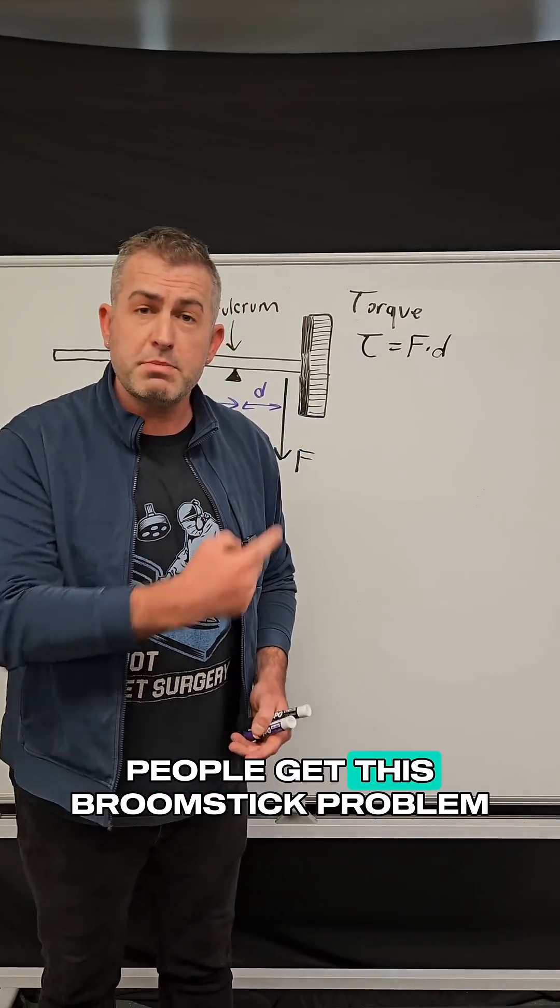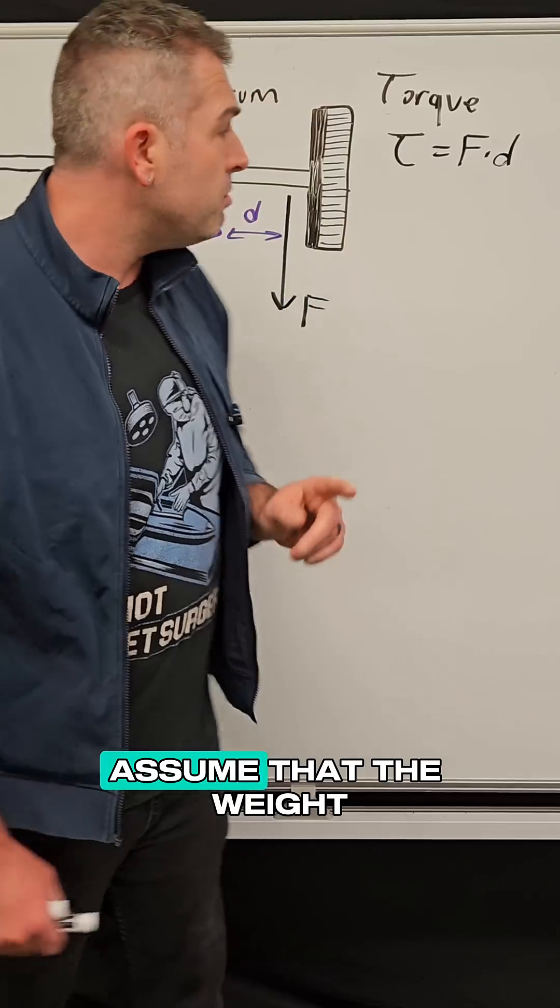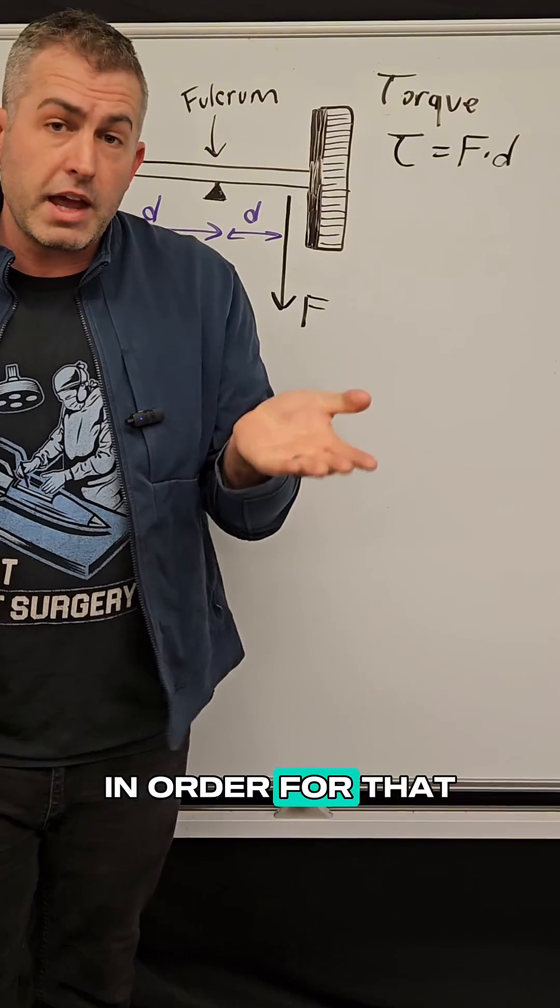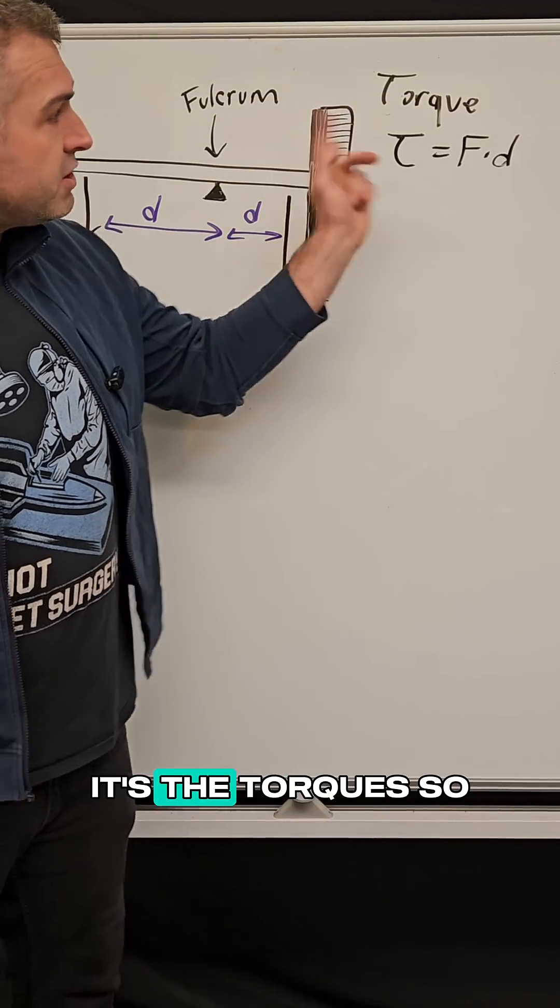So why do so many people get this broomstick problem incorrect? It's because they incorrectly assume that the weight on each side of my finger has to be equal in order for that to be balanced. But it's not the weights that have to be equal, it's the torques.